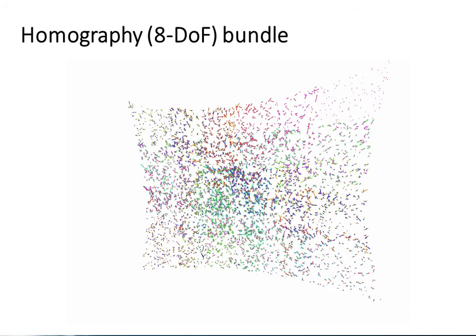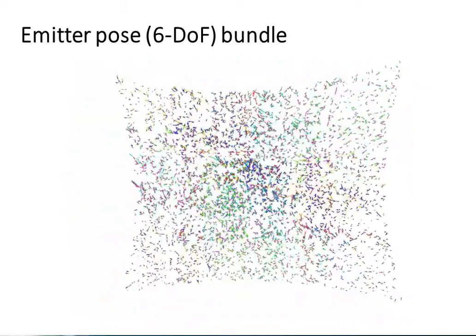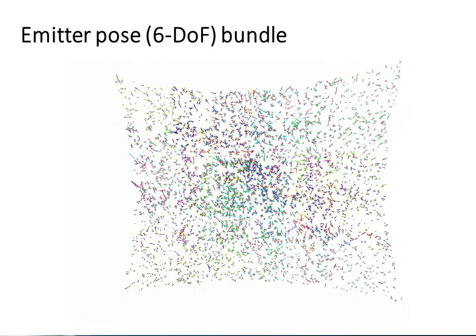The 6-DOF emitter pose is extracted from the homography to initialize a second-stage bundle adjustment, parameterized by rotations and translations. Bundling first for the homography widens the basin of convergence, as the homography stage is less strongly nonlinear.